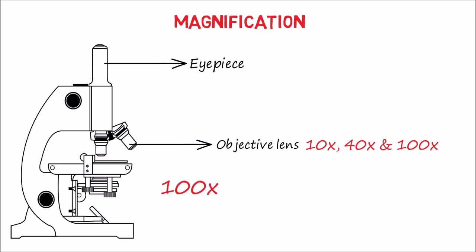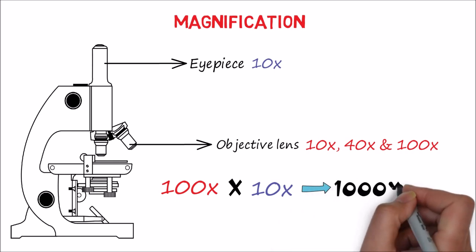If the object is focused under a 100x objective lens, the total magnification is obtained by multiplying this value by the eyepiece magnification, which is usually 10x. This gives a total magnification of 1000x. Hope you have understood the principle of the compound microscope.